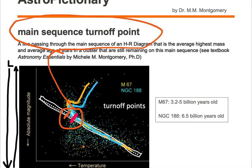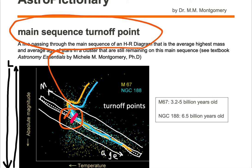How do we know it's the average highest mass and average age? All stars on the main sequence follow a pattern: age increases toward the bottom left, so stars in the bottom right are older while stars in the upper left are younger. Similarly for mass — objects on the main sequence in the upper left are more massive than those at the bottom right. So we know the age and mass of stars on the main sequence, and therefore we know the average age and average highest mass of stars that remain on it, which represents the main sequence turnoff points for these two clusters.